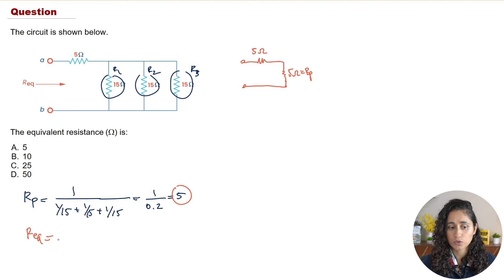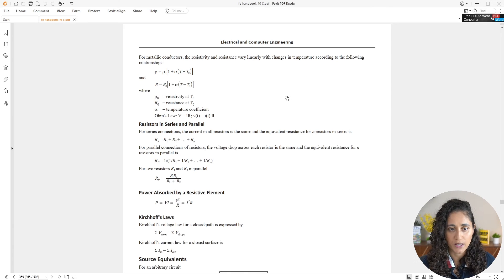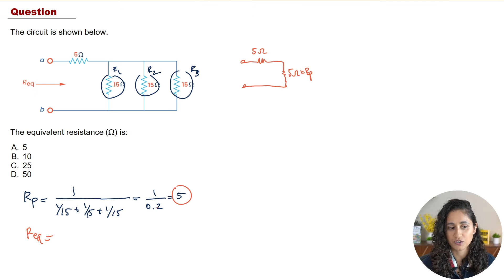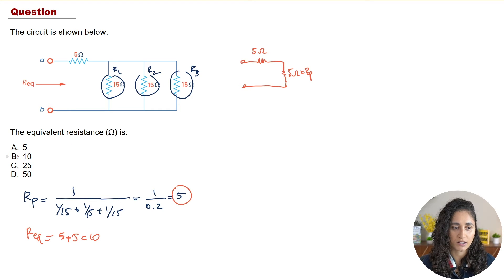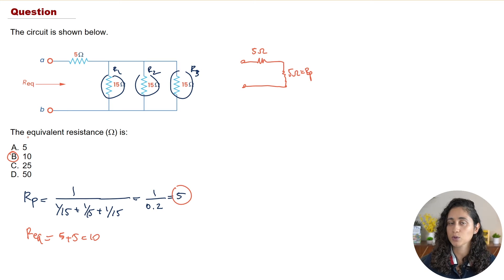The equivalent resistance is just 5 + 5. Going back to the reference handbook, the series equation is Rs = R1 + R2 + ..., so we simply add the resistors. 5 + 5 gives us 10 ohms. Looking at the multiple choice answers, the answer is B.